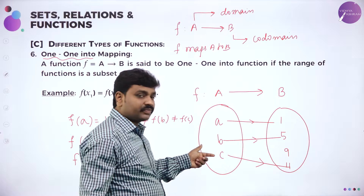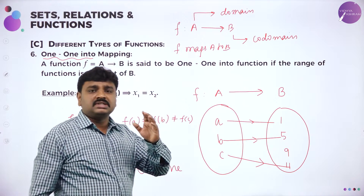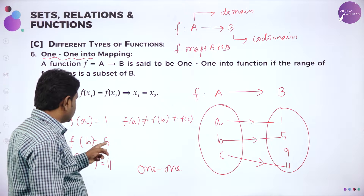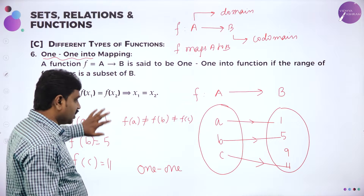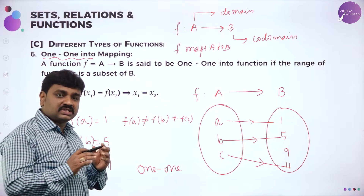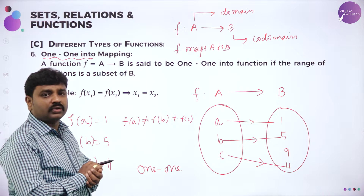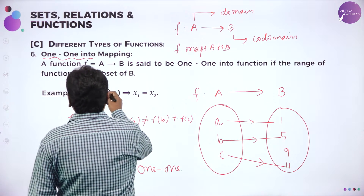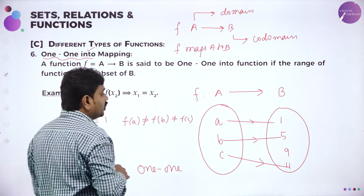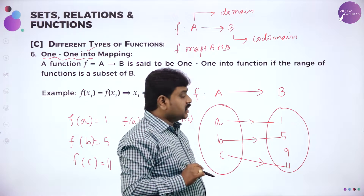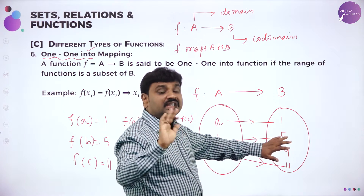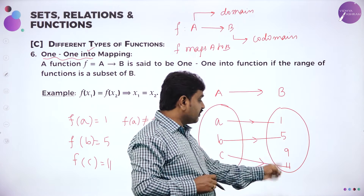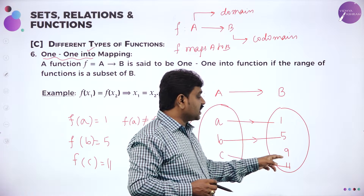So in domain I have A, B, C and all of A, B, C have different images. Image of A is 1, image of B is 5, image of C is 11 — they are not the same. So different elements have different images, therefore this is one-to-one. Now they are asking about into. Into means every element should not act as image. Here 1 is acting as image, 5 is acting as image, 11 is acting as image, but 9 is not acting as image.